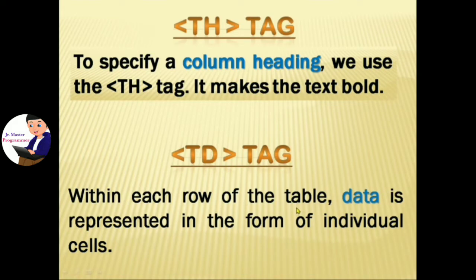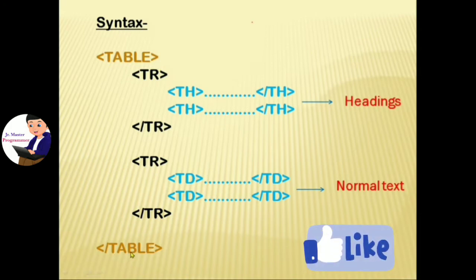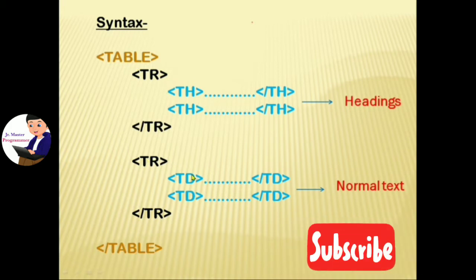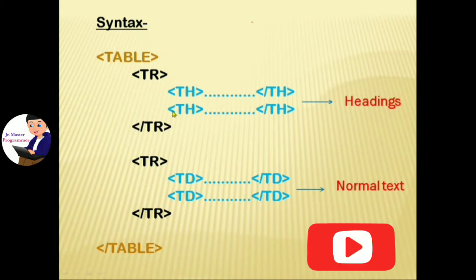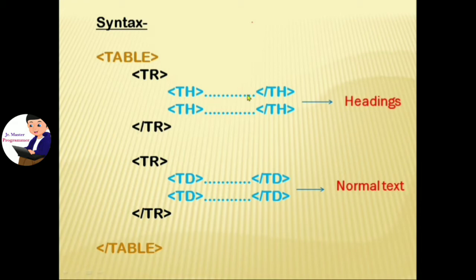Data is represented in the form of individual cells. This is the syntax of the table tag: start with the table tag and end with the closing table tag. Within the table tag we use tr tags, and within each tr tag we use th tags for headings and td tags for normal text.